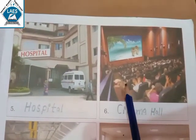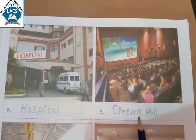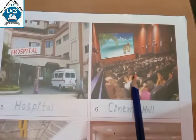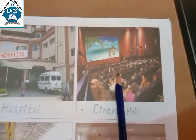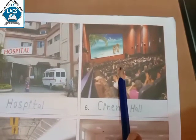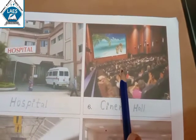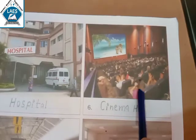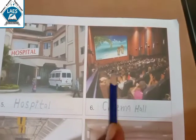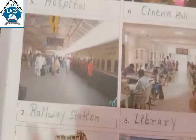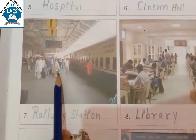Next is cinema hall. Cinema hall is where movies are watched and where everyone sits together to watch movies. Cinema hall is where people come and watch films.